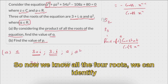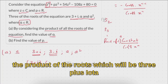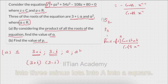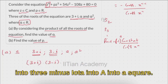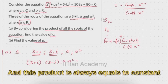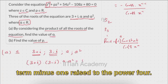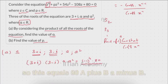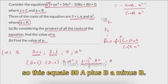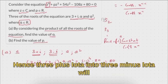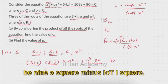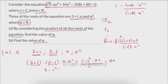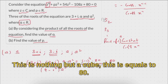Now we know all four roots, so we can identify the product of roots, which will be (3 plus iota) multiplied by (3 minus iota) multiplied by a multiplied by a squared. This product is always equal to minus one raised to the power n, multiplied by the constant term divided by the coefficient of x to the power n. The coefficient here is 1 and the constant term is 80, so this equals 80.